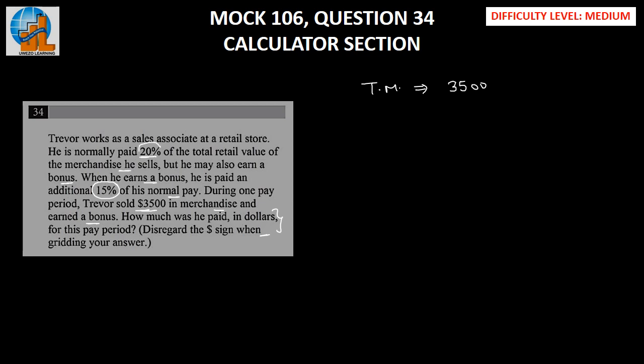he will earn 20% of his total merchandise value, which implies pay for Trevor should be 20% of $3,500. This should equal 20 upon 100 times $3,500. We can cancel out these two zeros, which implies Trevor is earning $700 on that particular day.